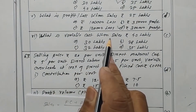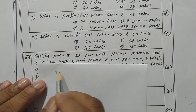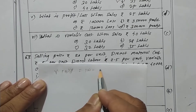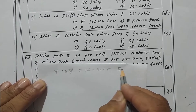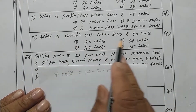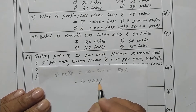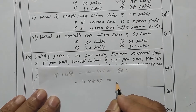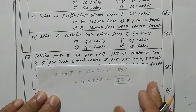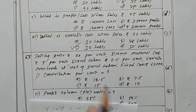Now what is the variable cost when sales will be 40 lakhs? Variable cost percentage is 100 minus PV ratio, which is 80 percent. So 40 lakhs sales into 80 percent gives variable cost of 32 lakhs. Option C is correct.